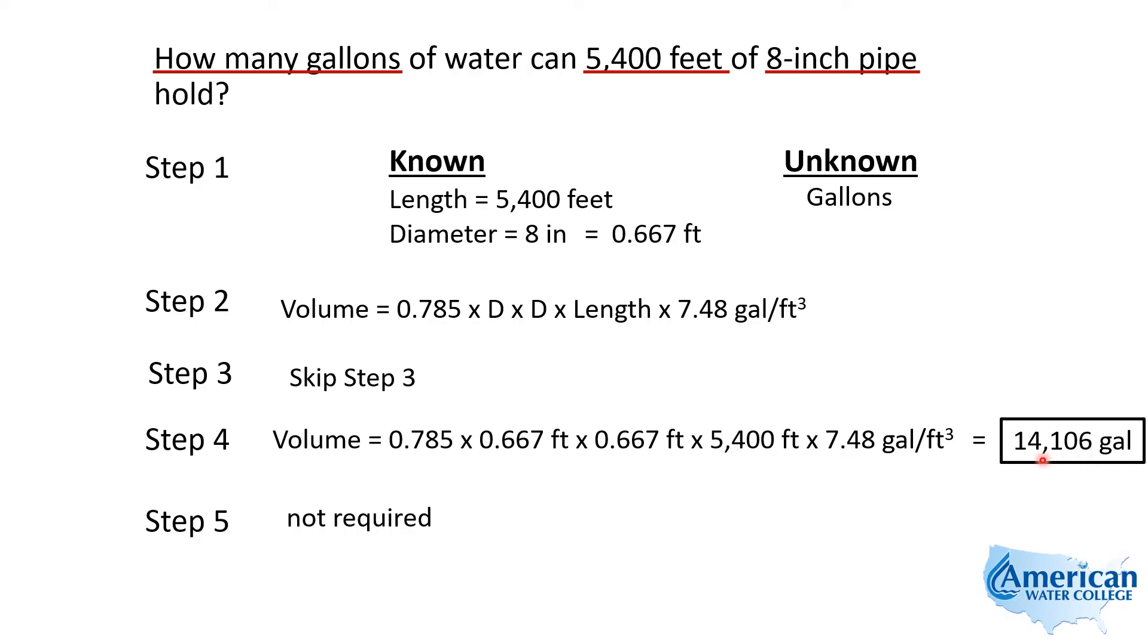Now, something worth noting, if I would have went 0.66666666, as many numbers as my calculator held, I would probably get about 14,092 gallons. Well, as far as significant digits go, that's the same answer.